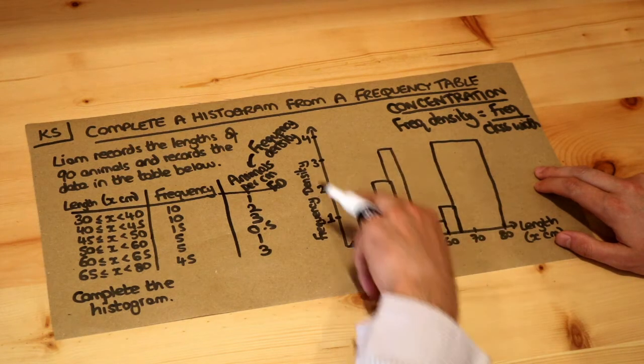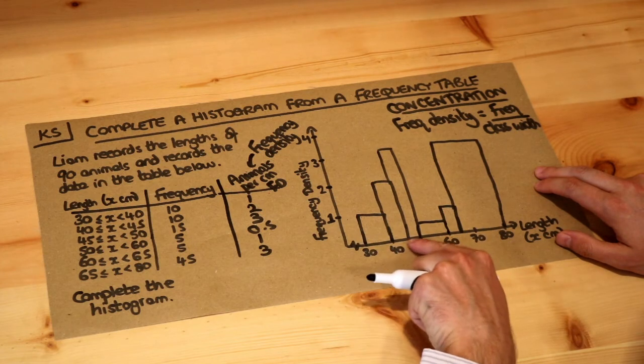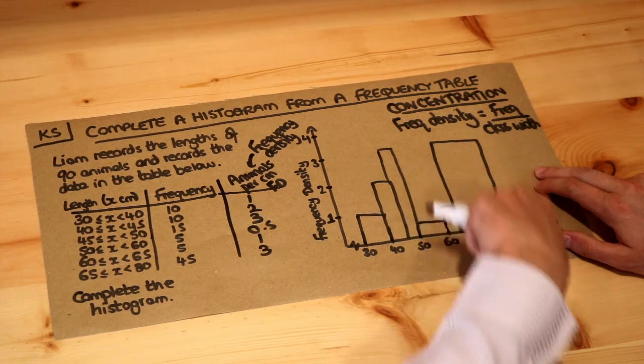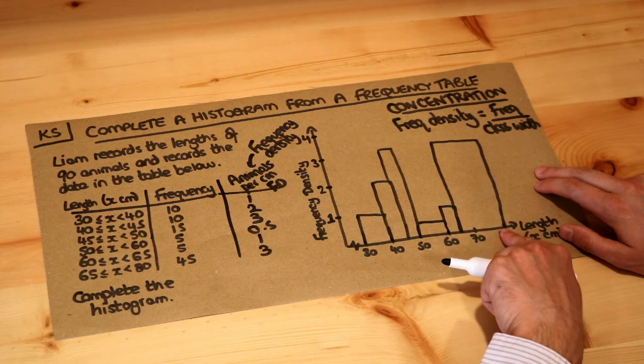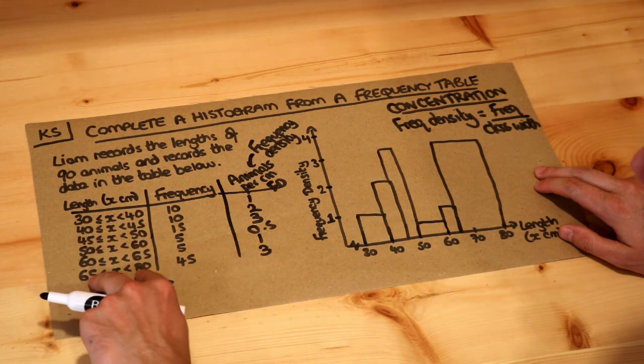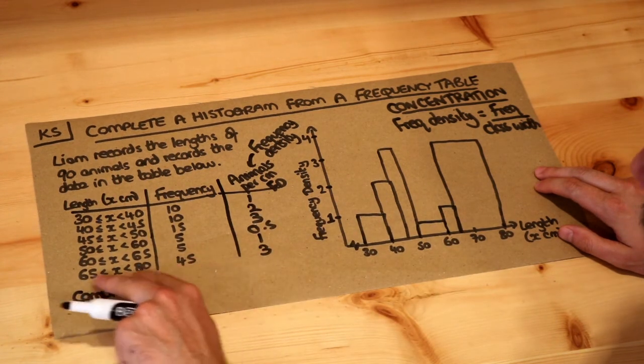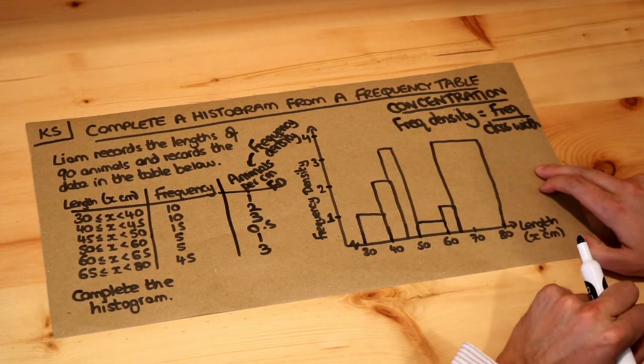Now what this histogram is showing you is that the animals are most concentrated between 45 and 50. So we've got the most animals per centimetre, and it's also very concentrated at the upper end of length. So we've got lots of animals in the 65 to 80, and that's even taking into account that we've got a wider interval. Even taking into account the wider interval, we've still got lots of animals concentrated in that particular range. So the frequency density is high. The concentration is high.